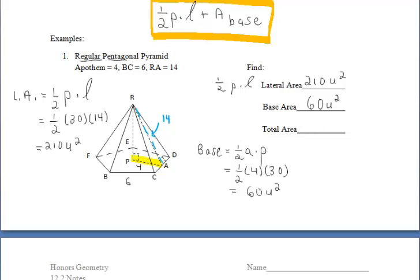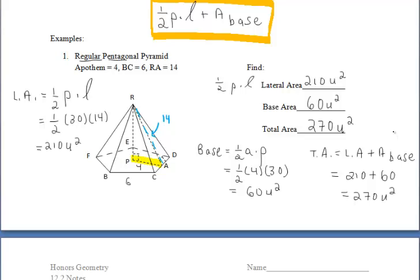Finally, to find the total surface area, we take our lateral area — the area of all the triangles — and add on the area of our base, the regular polygon. So 210 plus 60 gives us 270 units squared for the total area. We'll pick back up with the second part of the notes and do more example problems in just a moment.